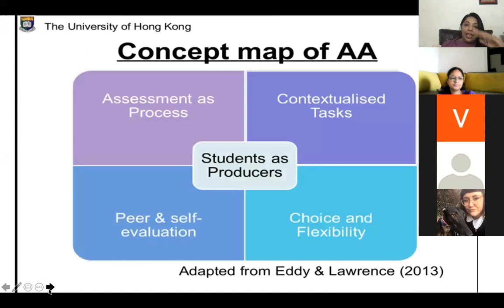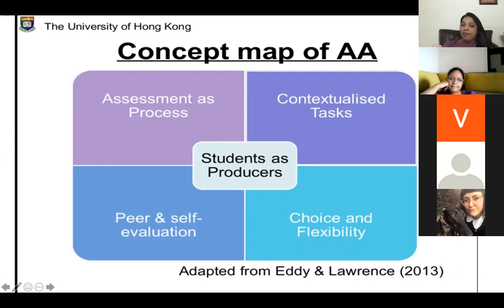There's an interesting concept map I follow very rigorously. It talks about four areas, and when students are producing something, there are four elements to authentic assessment: the task itself, assessment as process, contextualization of the task, peer and self-evaluation, and choice and flexibility. These four areas are crucial to authentic assessment.